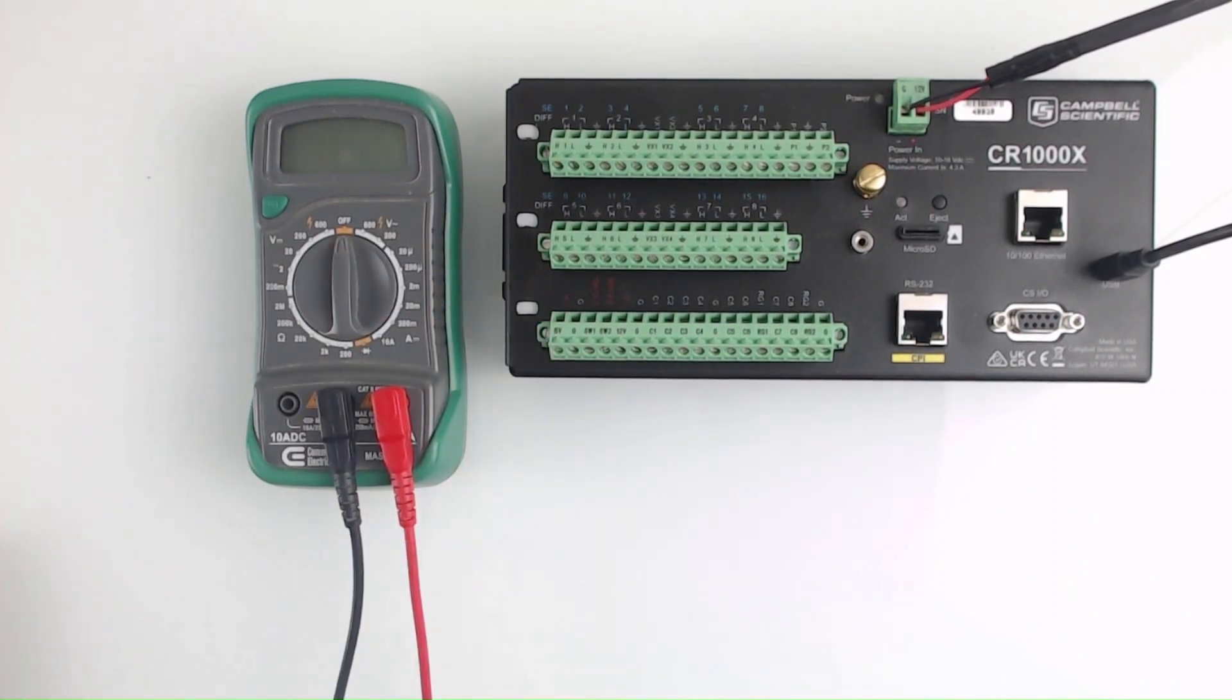Finally turn the selector knob to measure resistance labeled omega. Choose the lowest resistance range. For this multimeter the lowest range is 200 ohms.